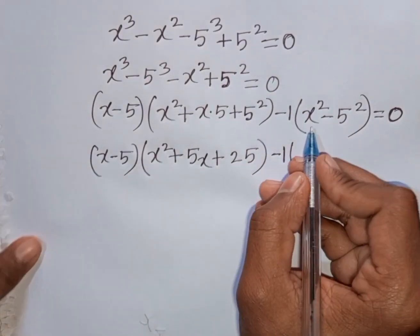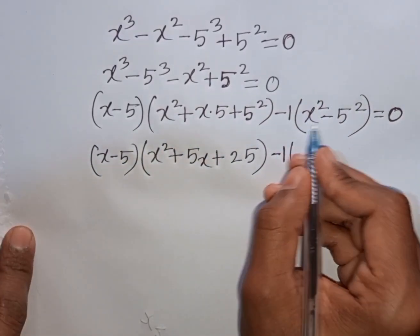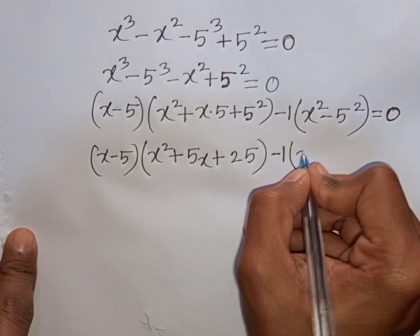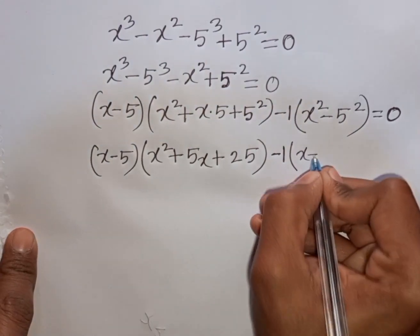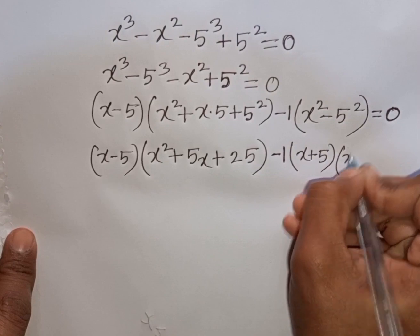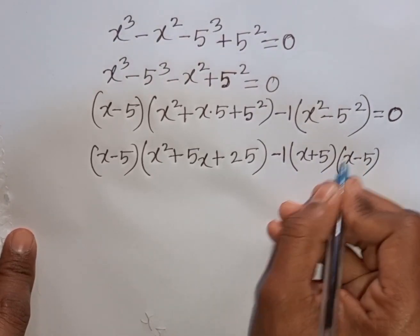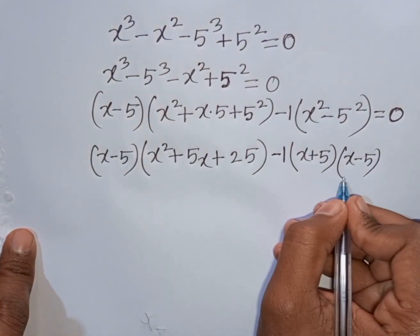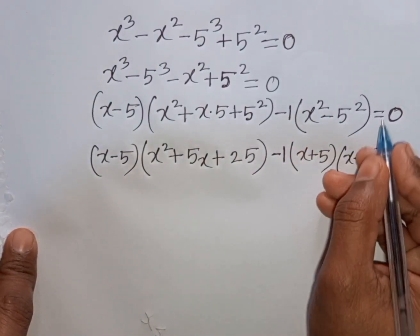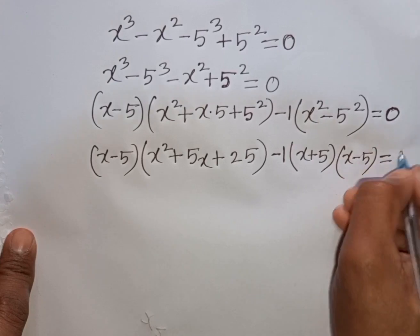Now I apply the formula for a² - b², where a = x and b = 5. According to the formula a² - b² = (a + b)(a - b), we write (x + 5)(x - 5). So the expression becomes (x - 5)(x² + 5x + 25) - 1(x + 5)(x - 5) = 0.